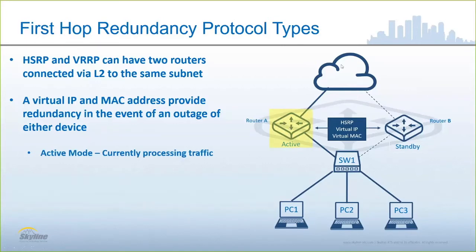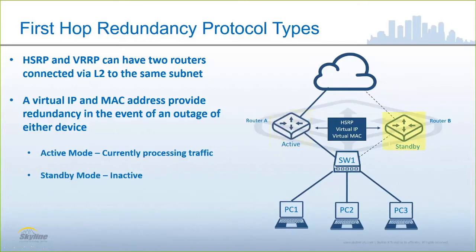This cloud represents traffic outside the subnet, and the active router would process data coming into that subnet. In the other direction, anything that clients within that subnet need to send off of their subnet is going to go through Router A at this particular time. Router A has taken over the duties of the default gateway for that subnet when it's in active mode. The alternate is in standby mode, which means it is not processing any data destined to or from that subnet.